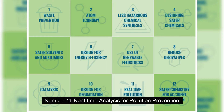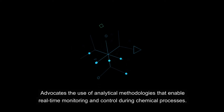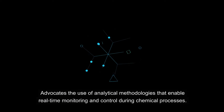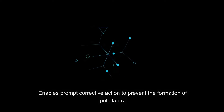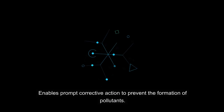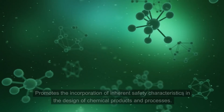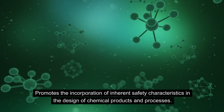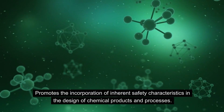Number 11: Real-time Analysis for Pollution Prevention — advocates the use of analytical methodologies that enable real-time monitoring and control during chemical processes, enabling prompt corrective action to prevent the formation of pollutants. Number 12: Inherently Safer Chemistry — promotes the incorporation of inherent safety characteristics in the design of chemical products and processes.